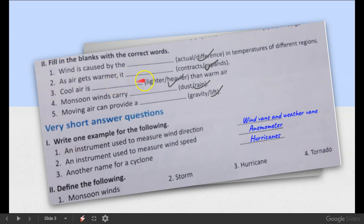Question number two: as air gets warmer, it expands. When air gets warmer, its molecules expand. Number three: cool air is heavier than warm air. Cool air is always heavier than warm air. Number four: monsoon winds carry rain. The main answer is rain because monsoon winds carry rain. Number five: moving air can provide a lift. Gravity is a force of earth, but moving air provides lift. The correct answer is lift.